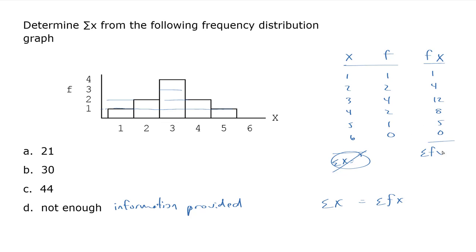When I sum these up, the sum of f times x, that's going to give me my sum of x. So I've got 5, 17, 25, 30. So my answer is b, 30.